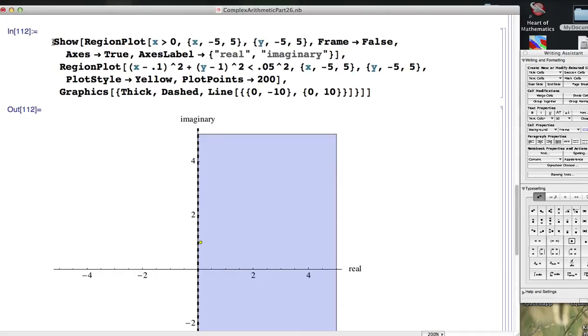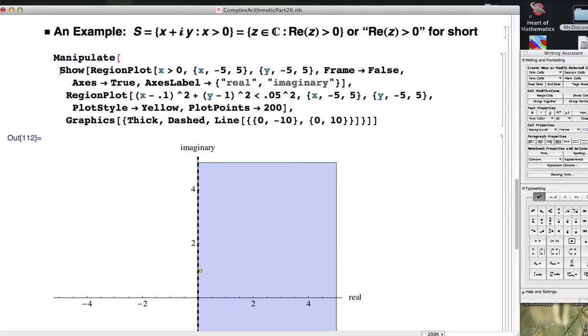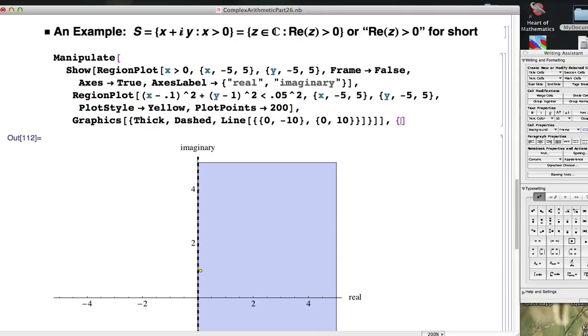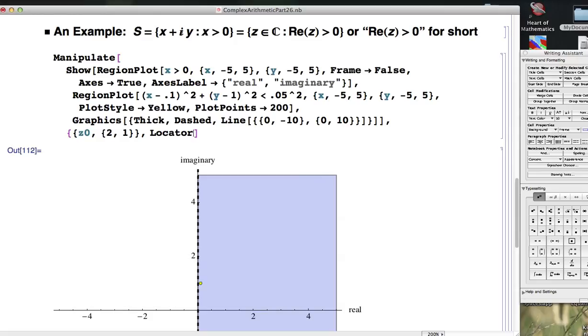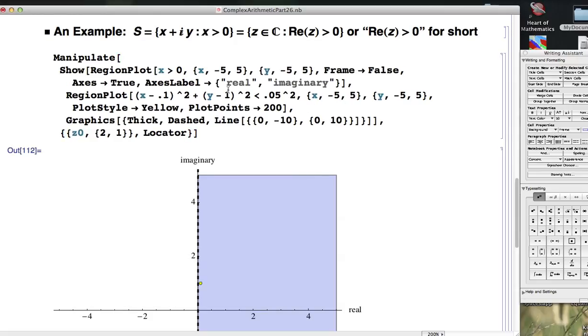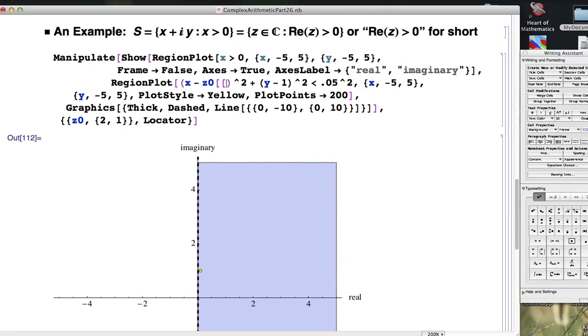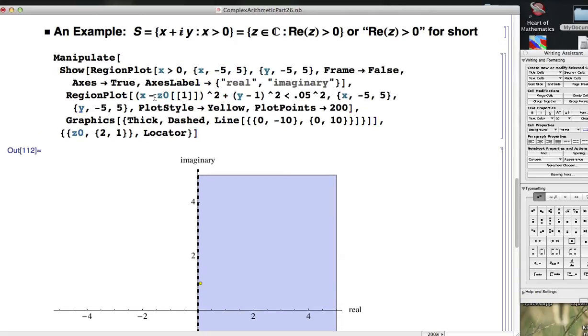Let's see if we can quickly make a manipulate that will animate what I just showed you here. And our animation parameter is going to be actually with, let's do it with locator. We've got our z₀, say, starting at the 0.2, 1.